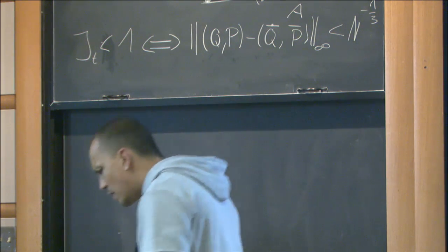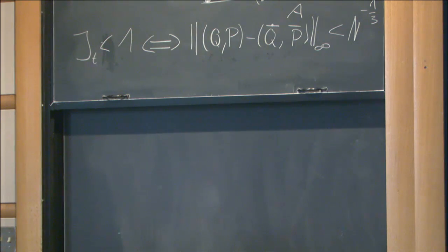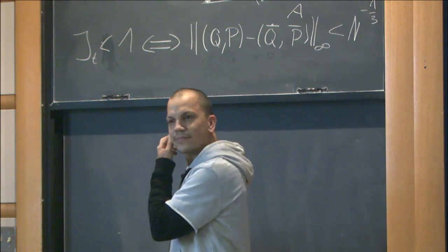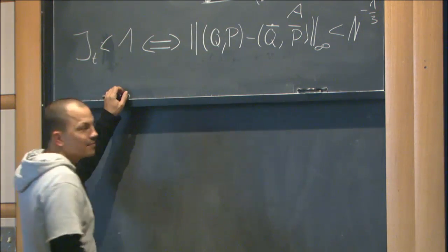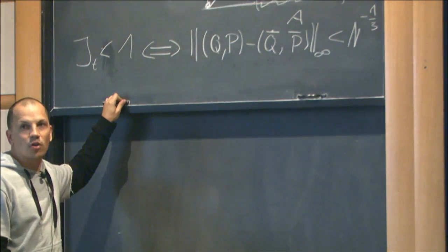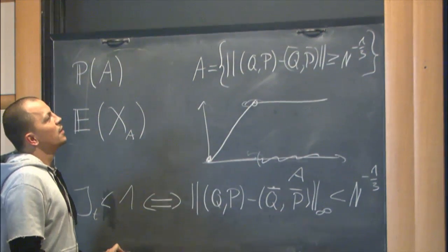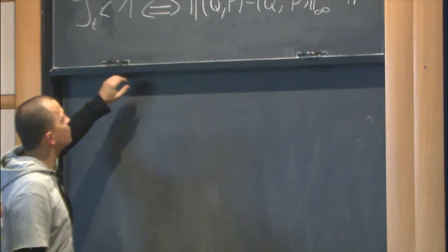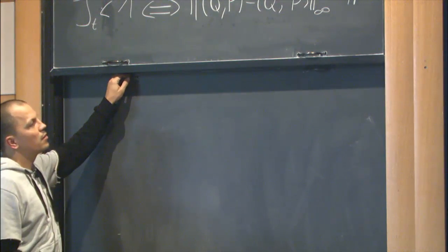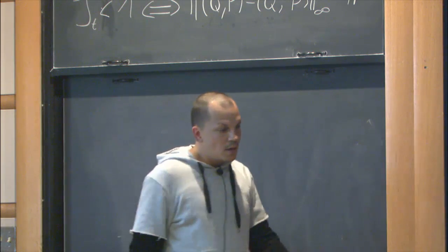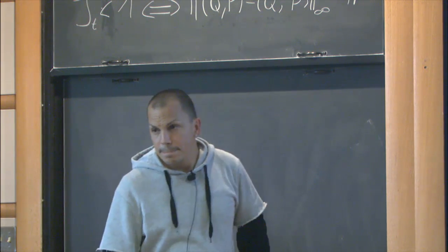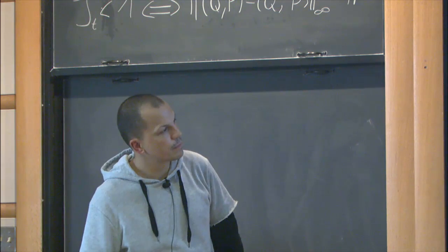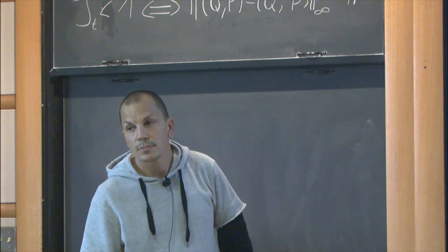Our result gives stronger results than previous ones — or rather, the interesting part is less the notion of convergence and more the system itself. Our cutoff is N^{-1/3+δ}, whereas Hauray–Jabin had N^{-1/6}, so our cutoff has only a few particles in the cutoff region while theirs still had many.